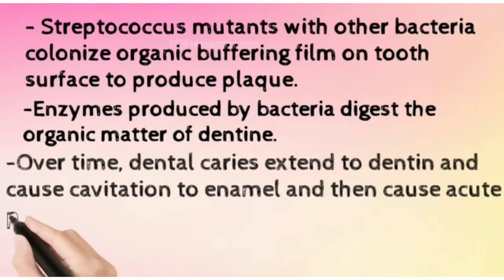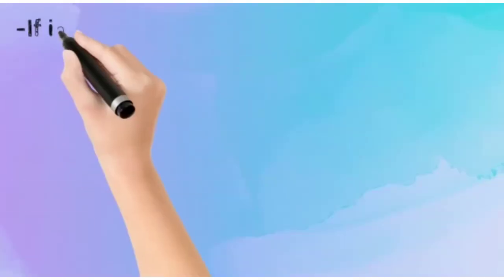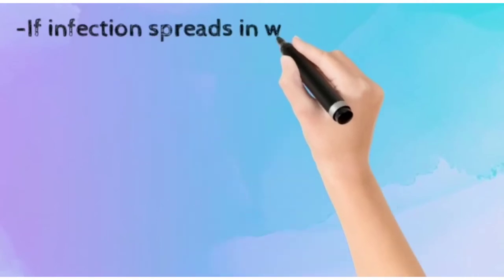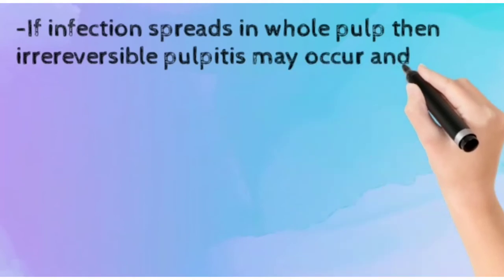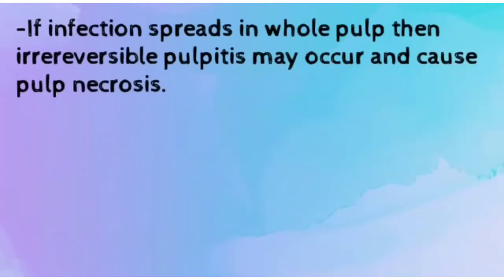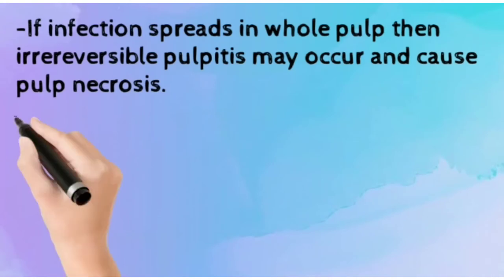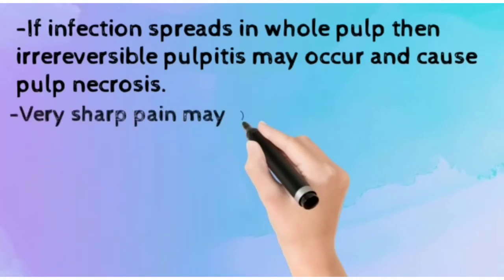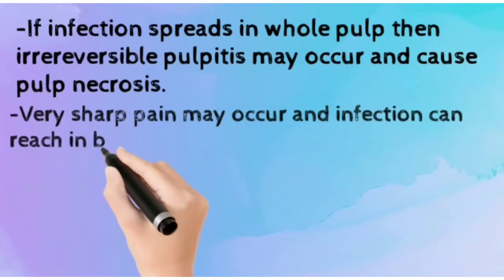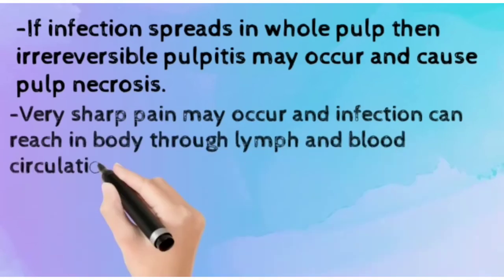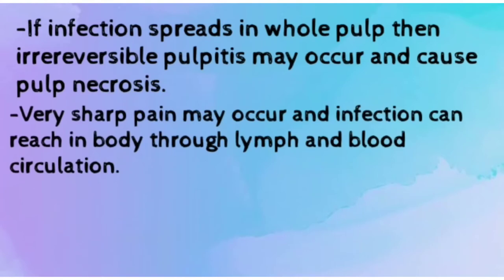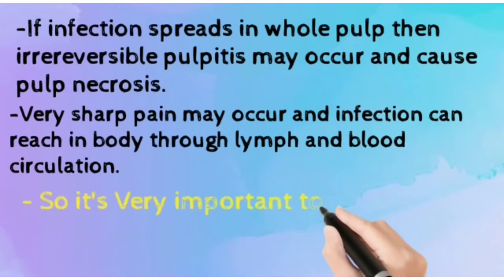Pulpitis is basically swelling in the pulp. If the infection spreads through the whole pulp, then irreversible pulpitis may occur and cause pulp necrosis. So it is very important to take treatment on time for dental caries. Very sharp pain can also occur, and the infection can reach the body through lymph and blood circulation. So it is very important to maintain oral hygiene.